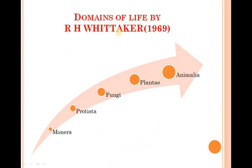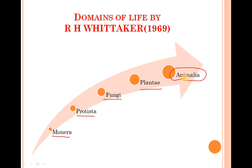Now come to the domains of life by Whittaker. According to Whittaker, first Monera came into being, then Protista, then Fungi, then Plantae, and finally in the last stage Animalia — animals — came into being.